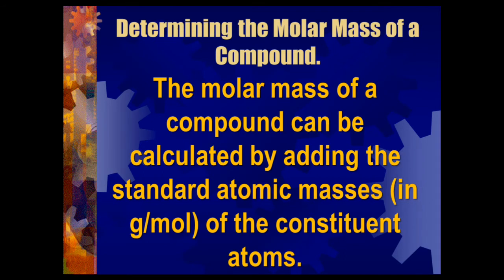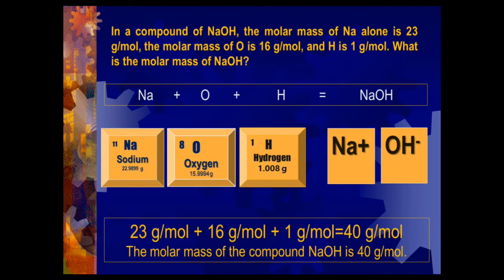Determining the molar mass of a compound: the molar mass of a compound can be calculated by adding the standard atomic masses in grams per mole of constituent atoms. In a compound of sodium hydroxide, the molar mass of sodium alone is 23 g/mol, oxygen is 16 g/mol, and hydrogen is 1 g/mol. The formula has 1 sodium, 1 oxygen, and 1 hydrogen. Adding them: 23 + 16 + 1 = 40 g/mol. Therefore, the molar mass of sodium hydroxide is 40 grams per mole.